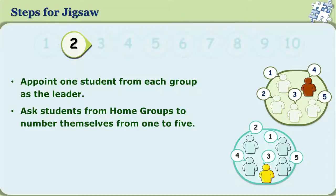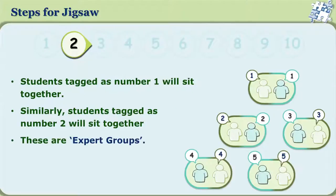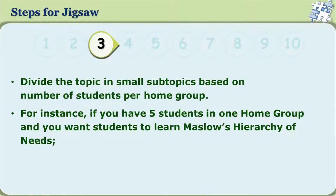Each member of the home group is asked to number themselves from one to five. Students tagged as number one will sit together. Similarly, students tagged as number two from different groups will sit together. These groups so formed are called expert groups. Hence, there is one student representative from every home group sitting in the expert group. In the next step, the teacher divides the topic into small subtopics based on the number of students per home group, ensuring that the number of subtopics corresponds to the number of students in the home group.